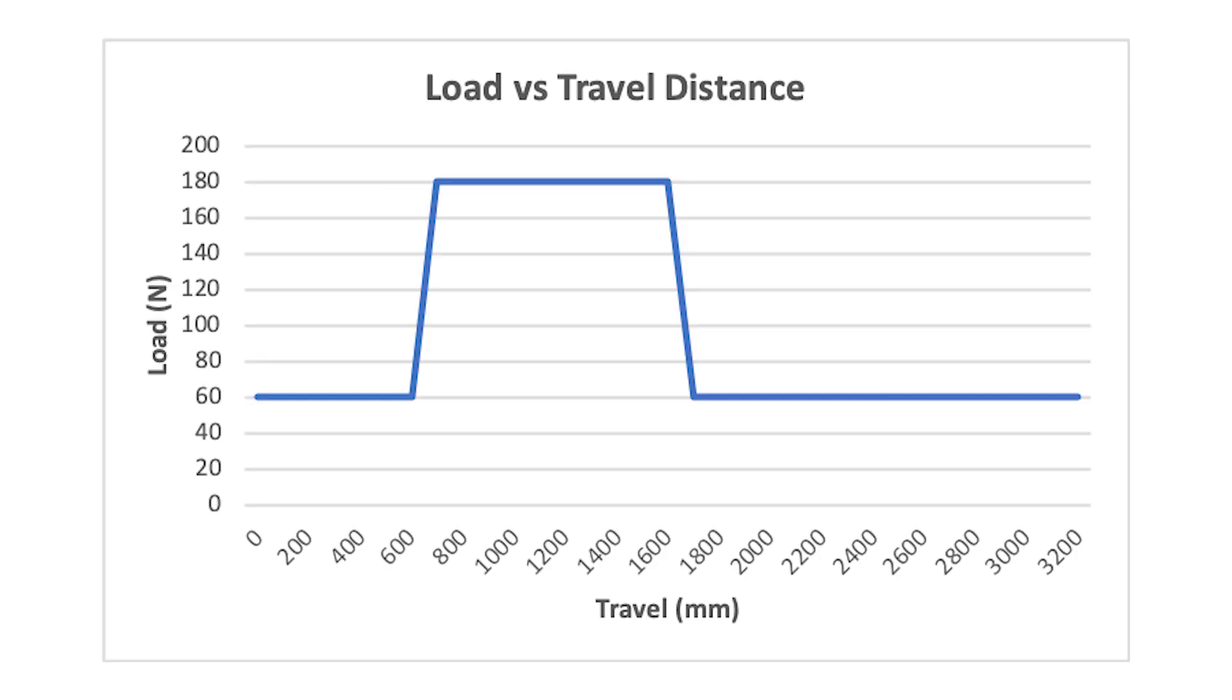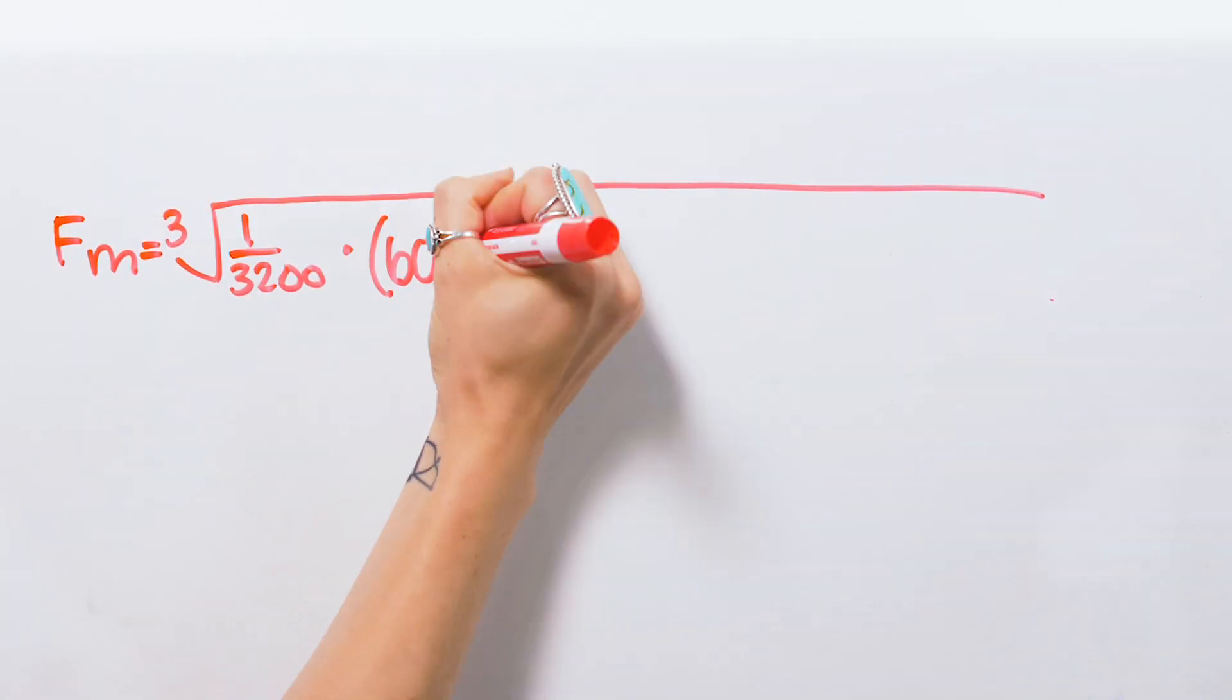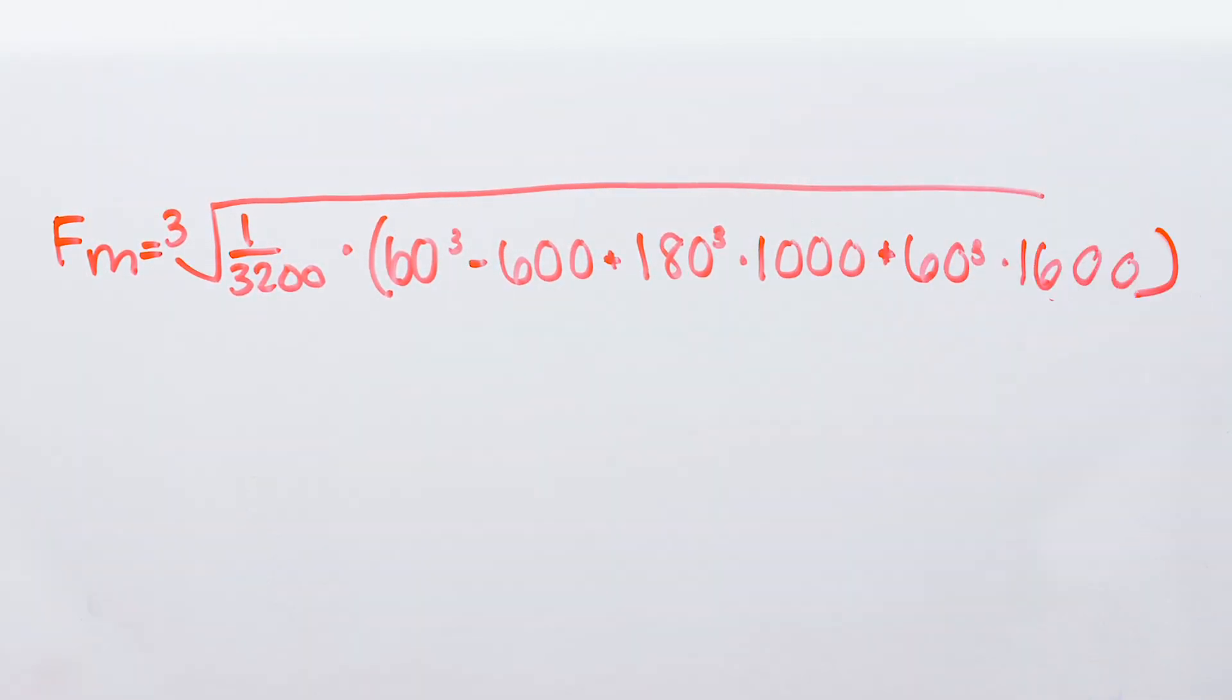So to summarize, the actuator's loading is 60 newtons for 600 millimeters, 180 newtons for 1,000 millimeters, and 60 newtons for 1,600 millimeters. So the mean equivalent dynamic load equation would look like this.